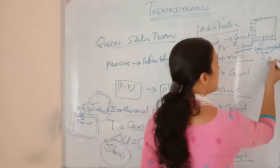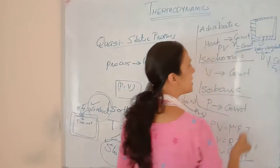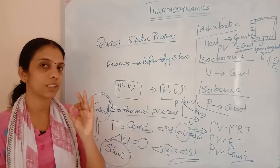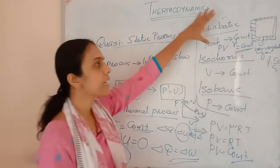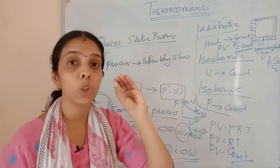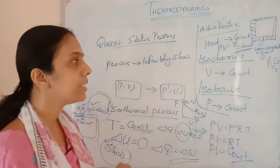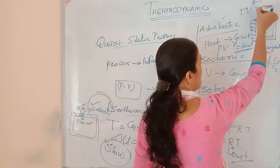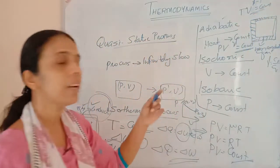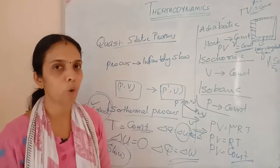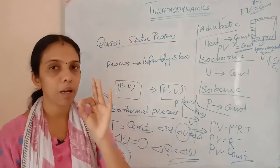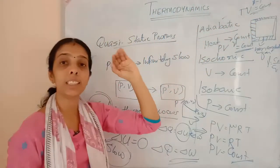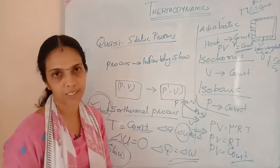Gamma equals CP divided by CV — specific heat capacity at constant pressure divided by specific heat capacity at constant volume. That is the adiabatic process condition: PV to the power gamma equals constant. We can also write it in terms of T and V as TV to the power gamma minus 1 equals constant.